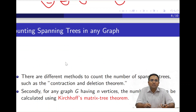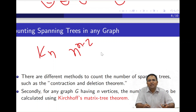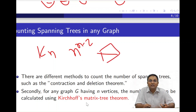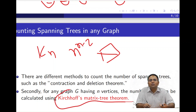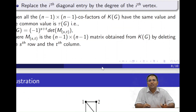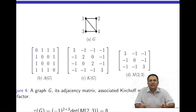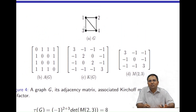Now let's come back to the original problem of counting spanning trees. The Cayley formula is fine for Kₙ, but what about other graphs? Not all graphs are complete. For an arbitrary graph, we use Kirchhoff's Matrix Tree Theorem. I will explain this theorem in the context of a specific example.